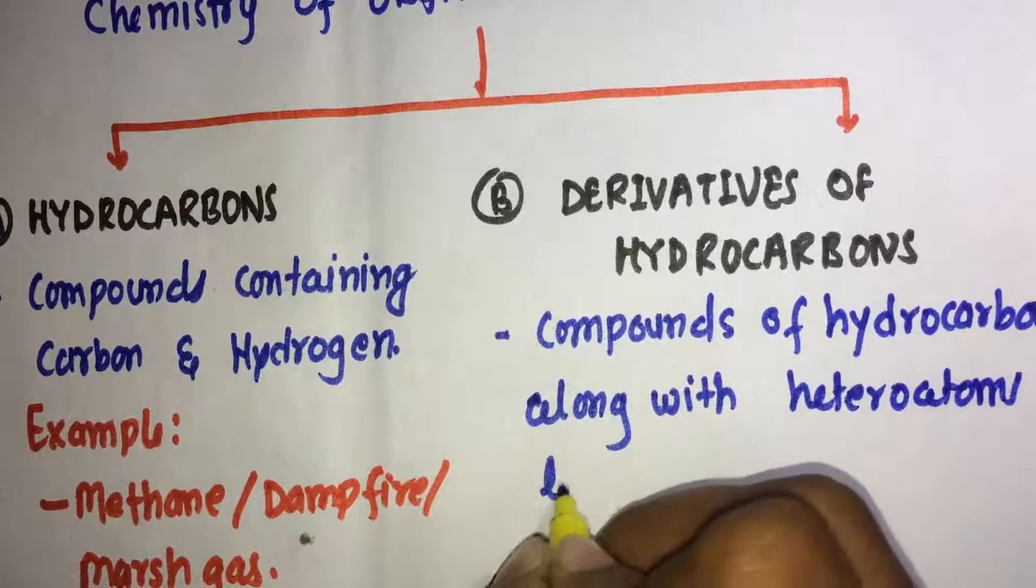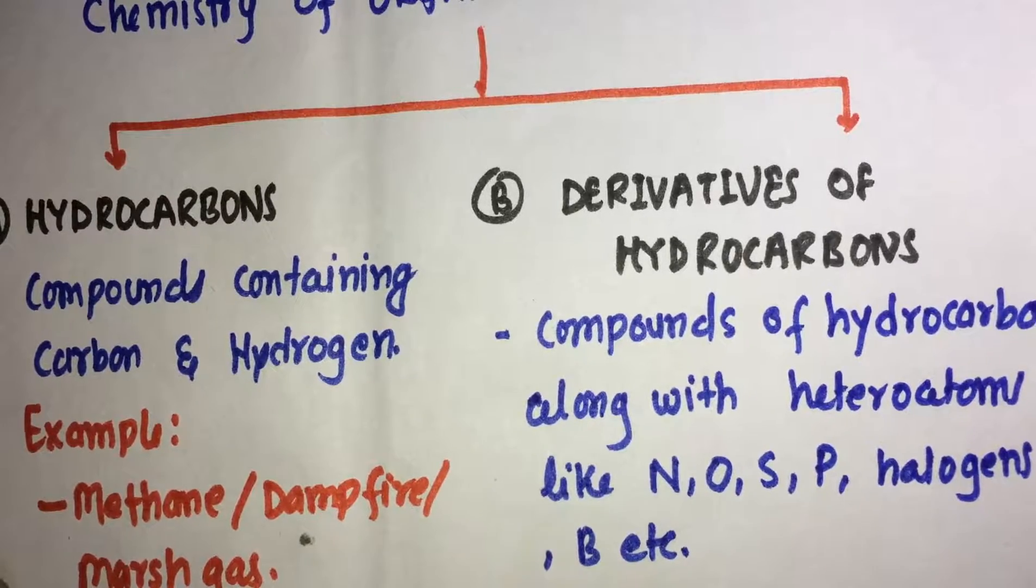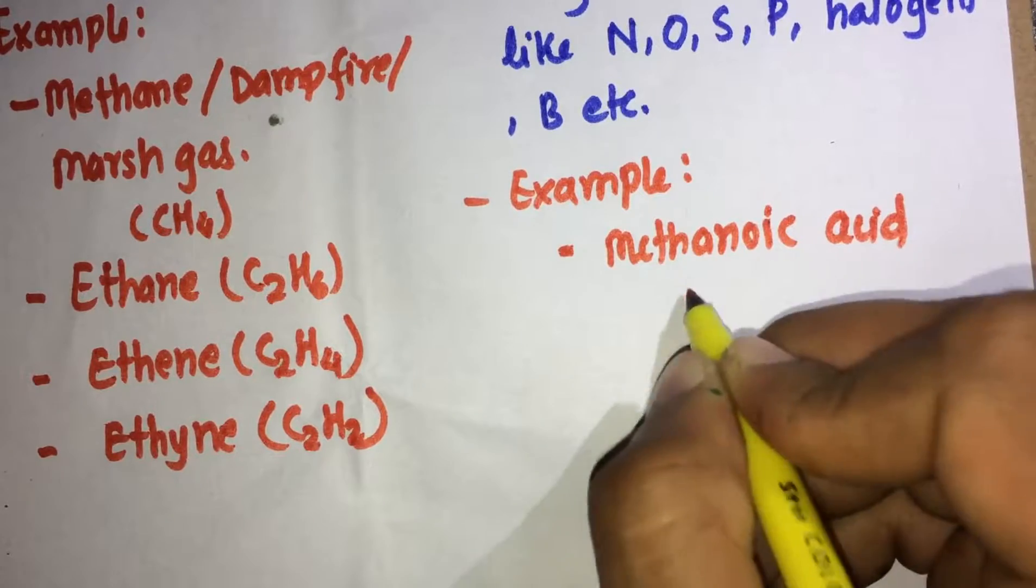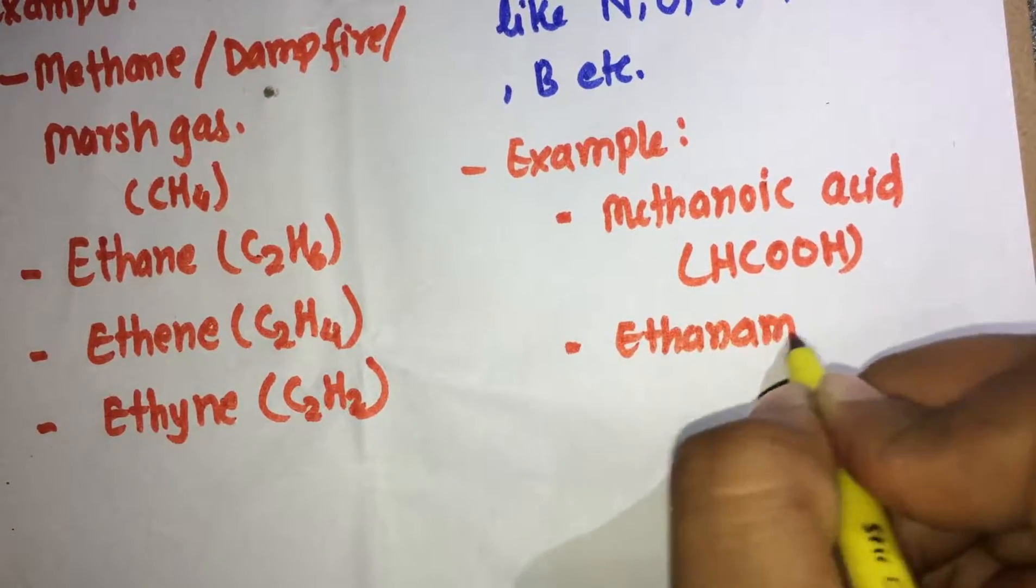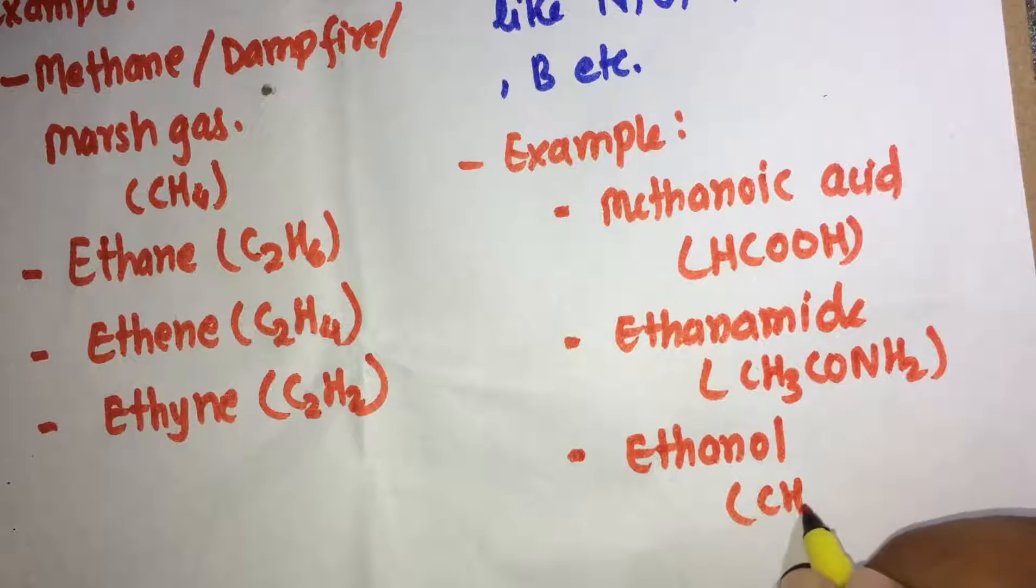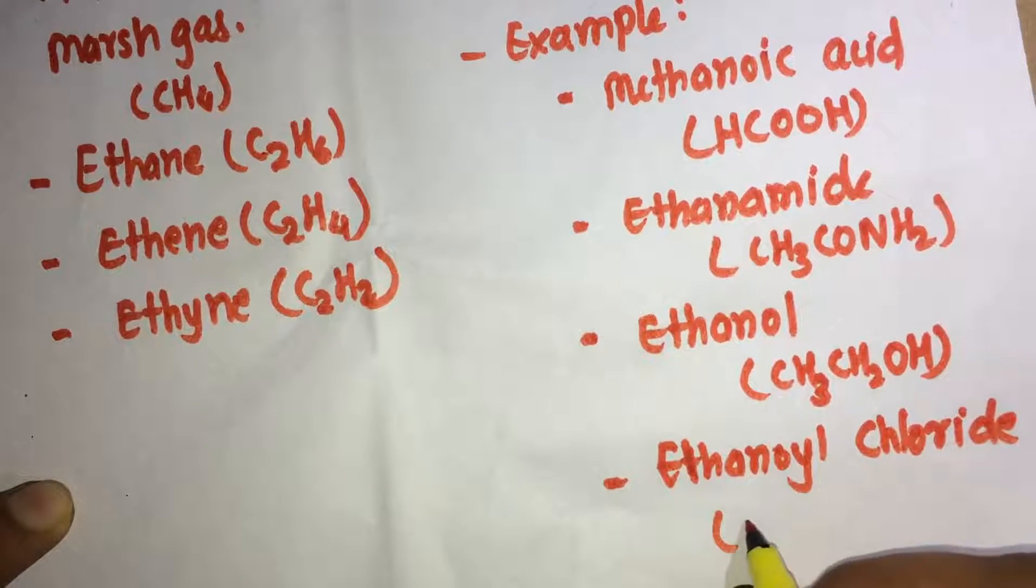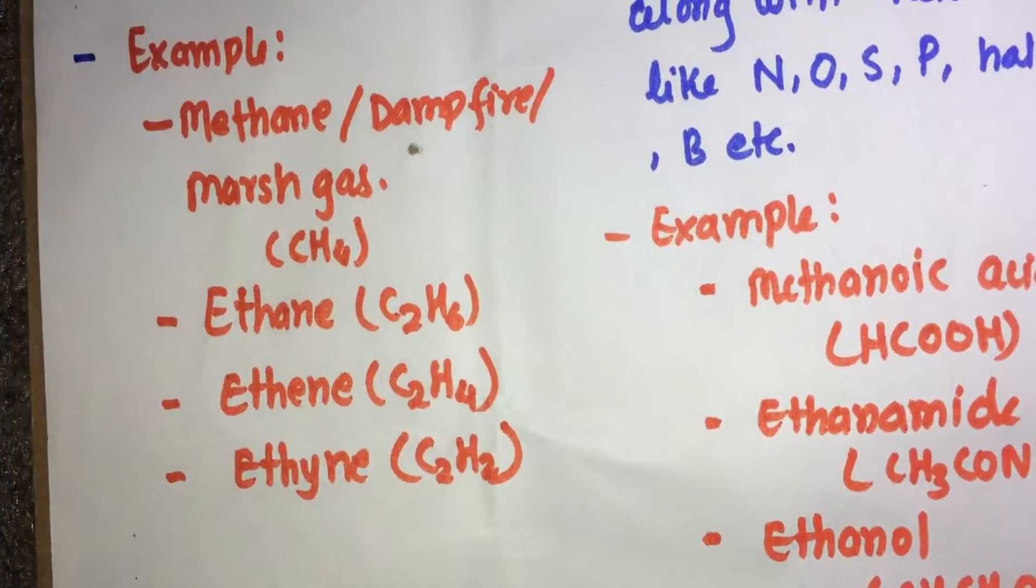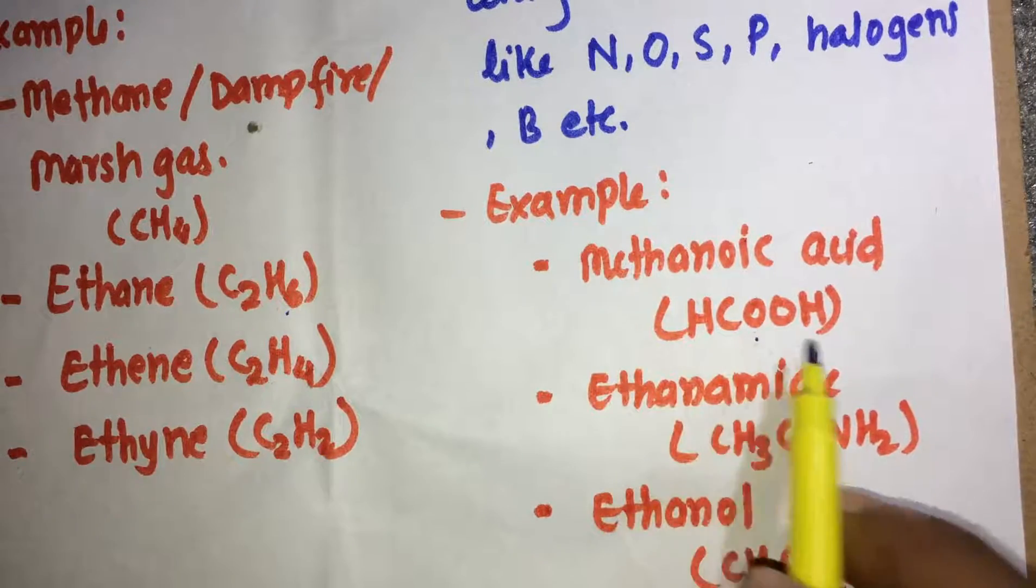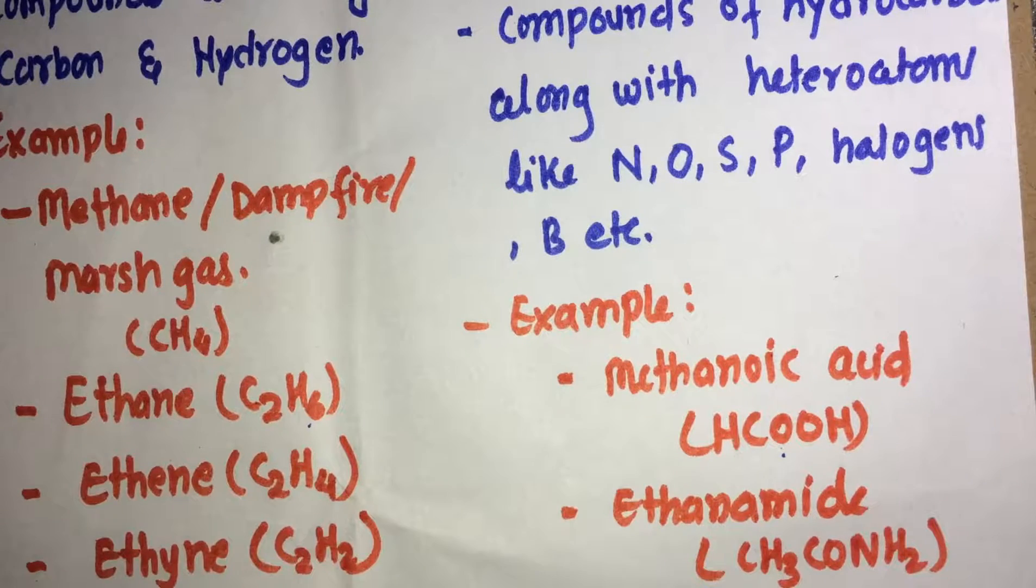Moving to derivatives of hydrocarbons, these are hydrocarbons containing hetero elements like nitrogen, oxygen, sulfur, phosphorus, halogens and boron etc. For example, methanoic acid and phenylamine contain oxygen, nitrogen and chlorine present as heteroatoms in their derivatives.